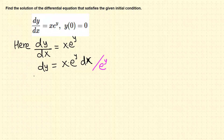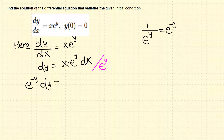So 1 over e to the y is the same as e to the negative y. When we divide, we get e to the negative y dy on the left and x dx on the right side. We have a function of y dy and a function of x dx, so we can now integrate.